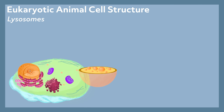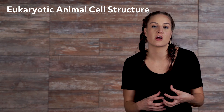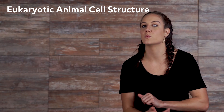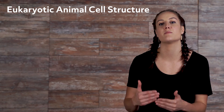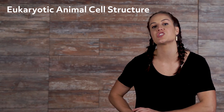Lysosomes. Vesicles are small, round-shaped phospholipid membranes produced by the Golgi apparatus. Within the membrane of a lysosome, acidity is maintained by a proton pump, and digestive enzymes are also contained within the lysosome. That is an overview of the structure of a eukaryotic animal cell. In our next video lesson, we will look at the function of every component we talked about in this video, so be sure to check it out.